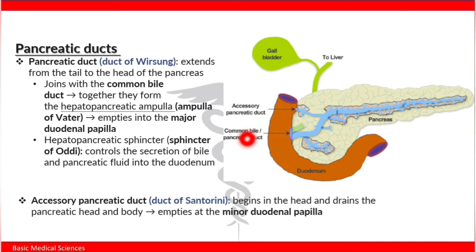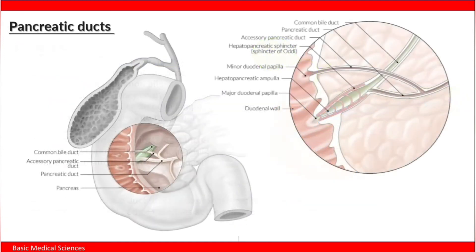This duct empties at the minor duodenal papilla. Let's have a closer look at the pancreatic ducts — you can see the main pancreatic duct and above it there is an accessory pancreatic duct.